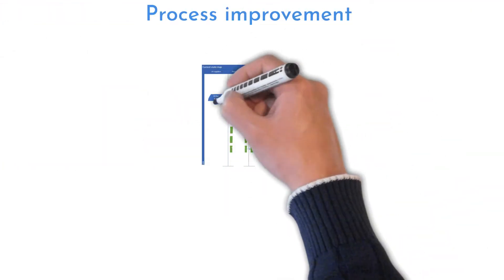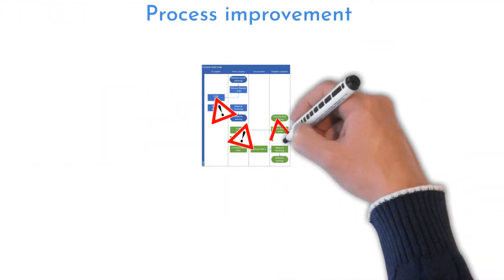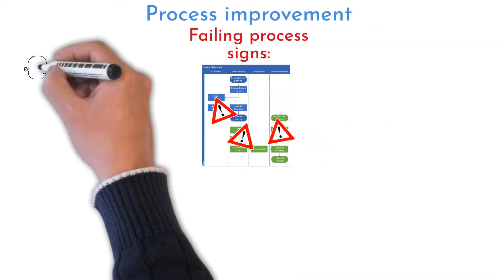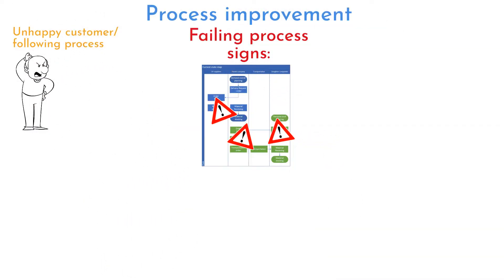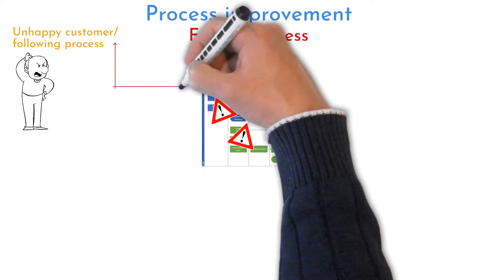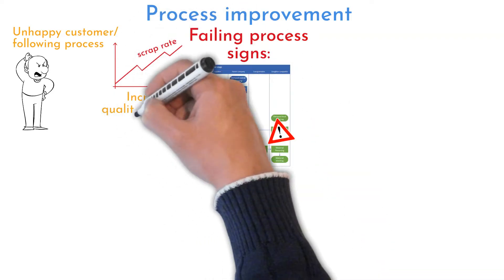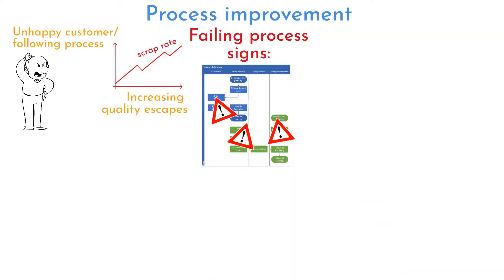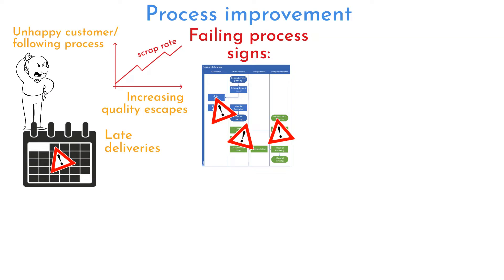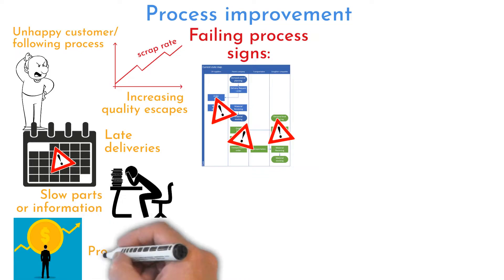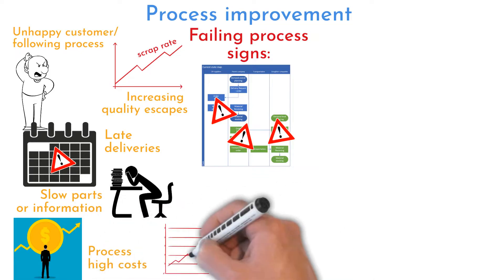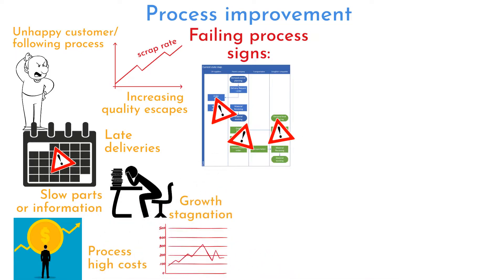Process improvement is required when you have a failing or malfunctioning process. Signs of a failing process can include an unsatisfied customer or following process step, high quality escapes, growing discrepancy rate, late deliveries, slowly moving parts or information between work cells or departments, high costs, slow growth, or stagnation.